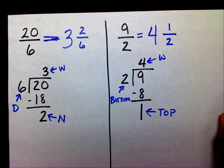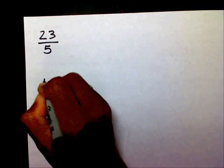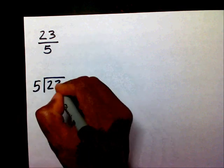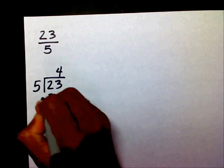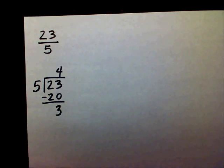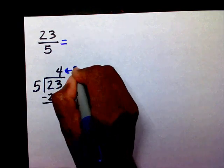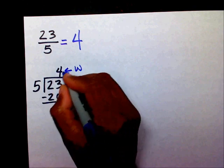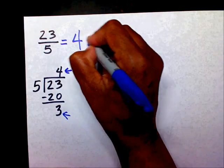Now I'd like for you to work one. Try twenty-three-fifths. You'll pause the video while you solve that. Alright, so we're going to divide twenty-three by five. Five goes into twenty-three four times. Four times five is twenty. I'm going to subtract — that will give me three. You should have ended up with four as your whole number. Three goes on the top, and five goes on the bottom.